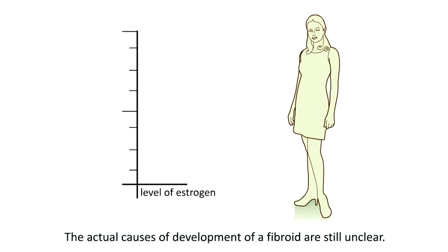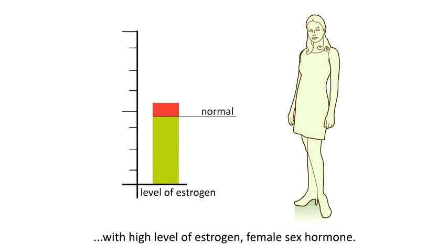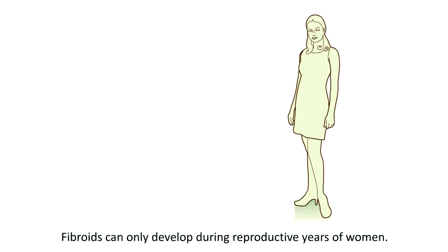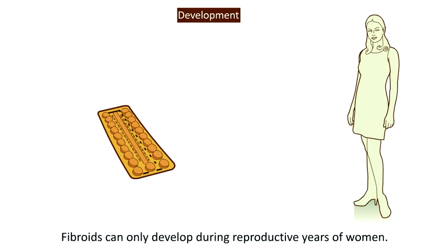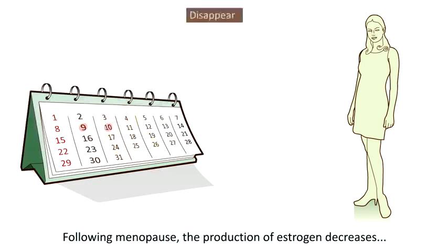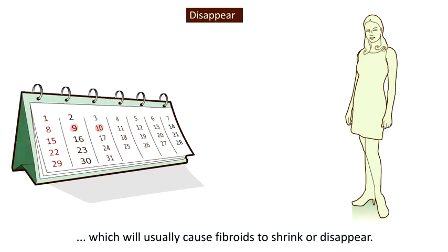The actual causes of development of a fibroid are still unclear. However, it has been documented that fibroids are associated with high levels of oestrogen, the female sex hormone. Fibroids can only develop during reproductive years of women. Following menopause, the production of oestrogen decreases, which will usually cause fibroids to shrink or disappear.